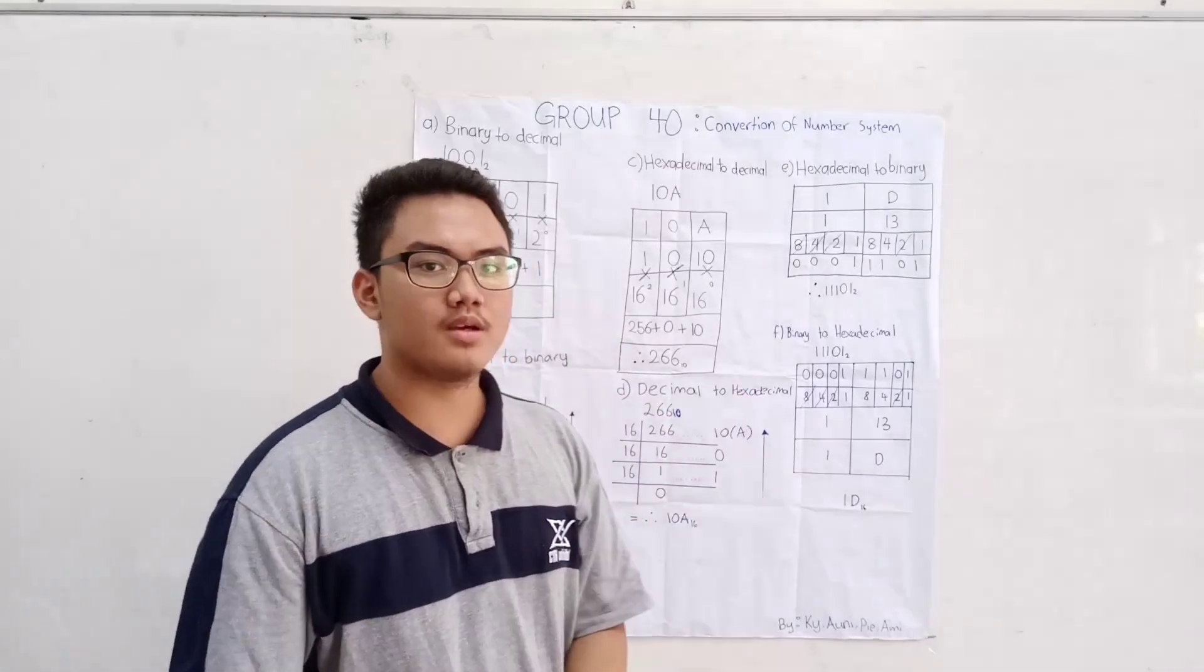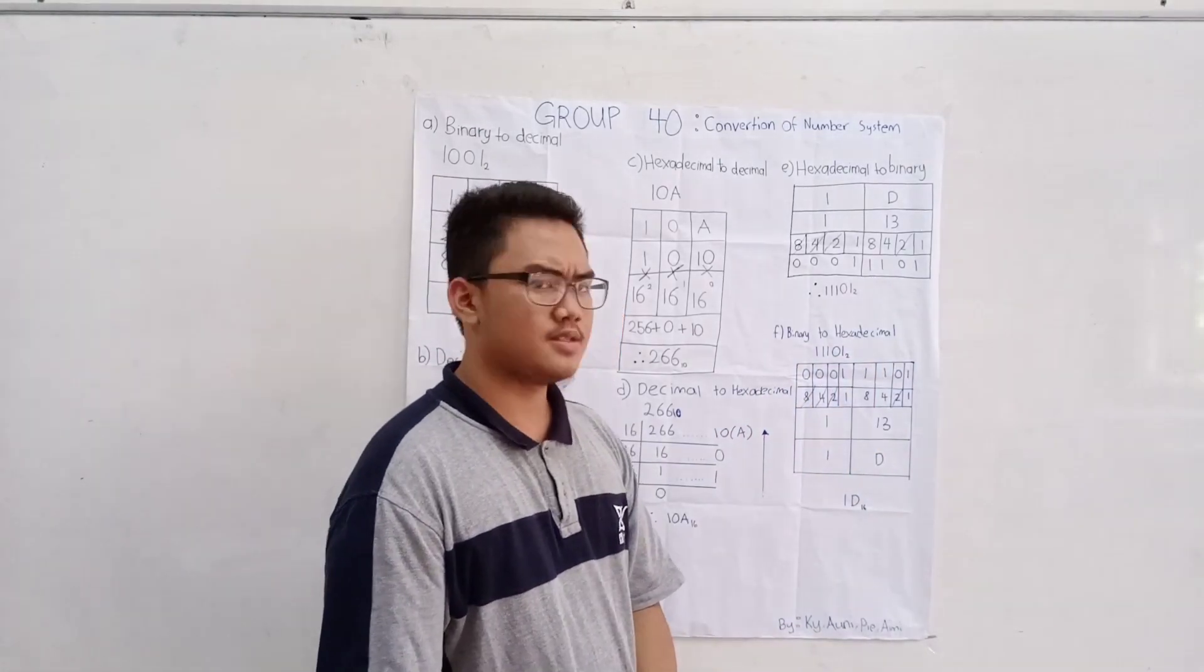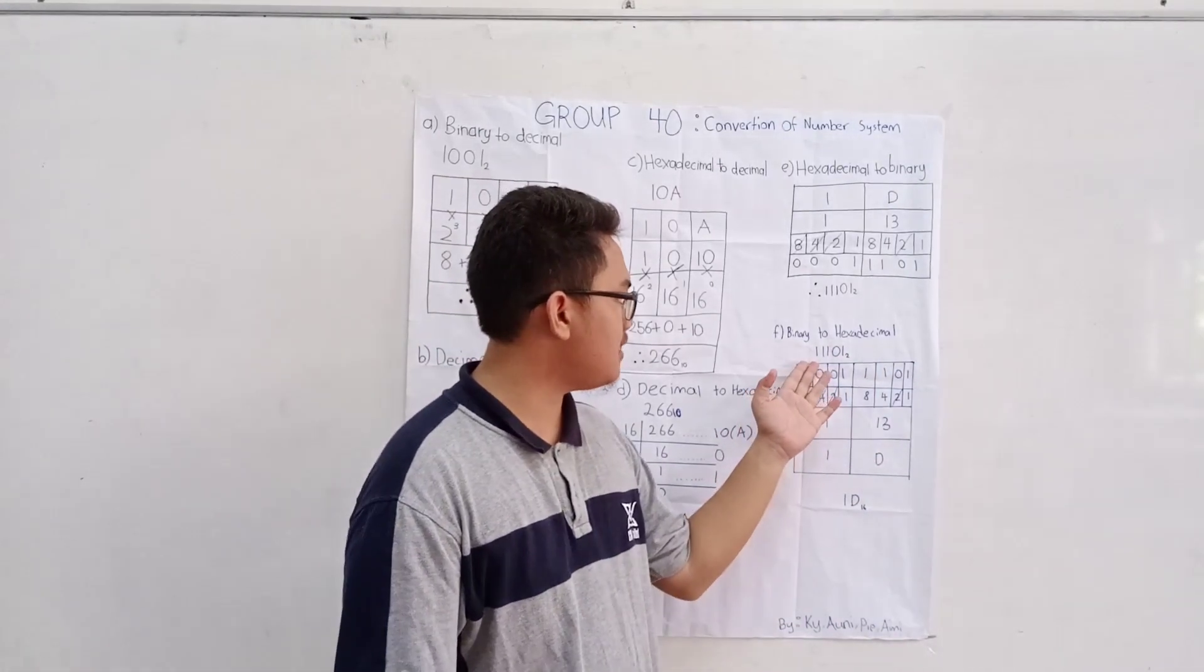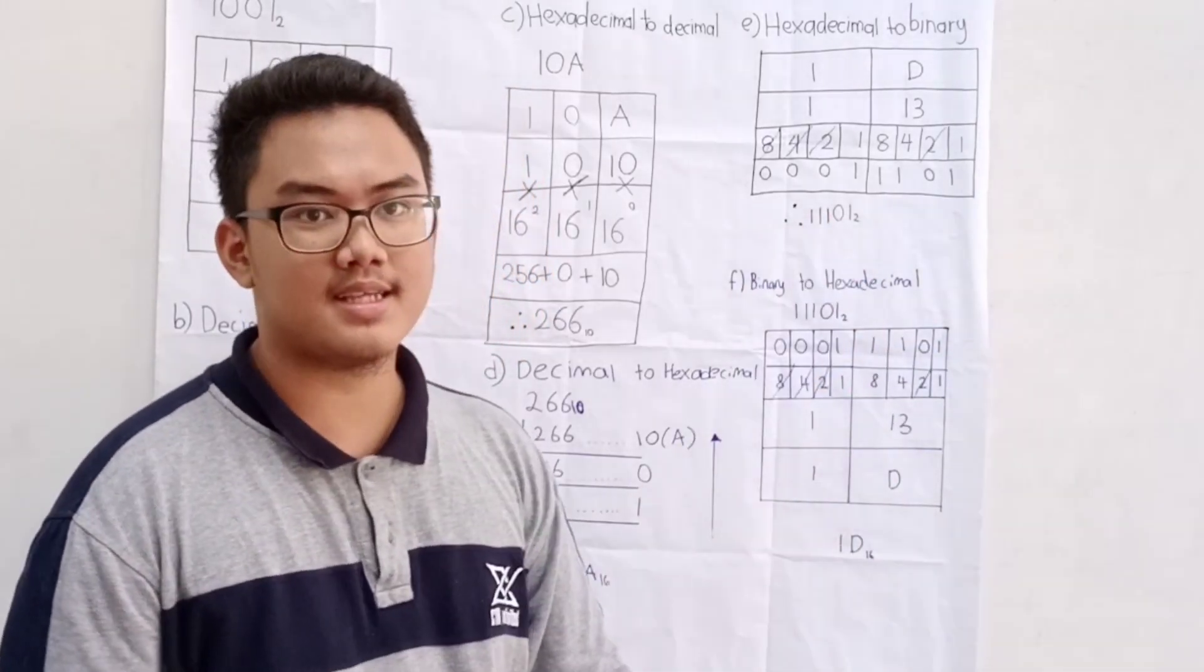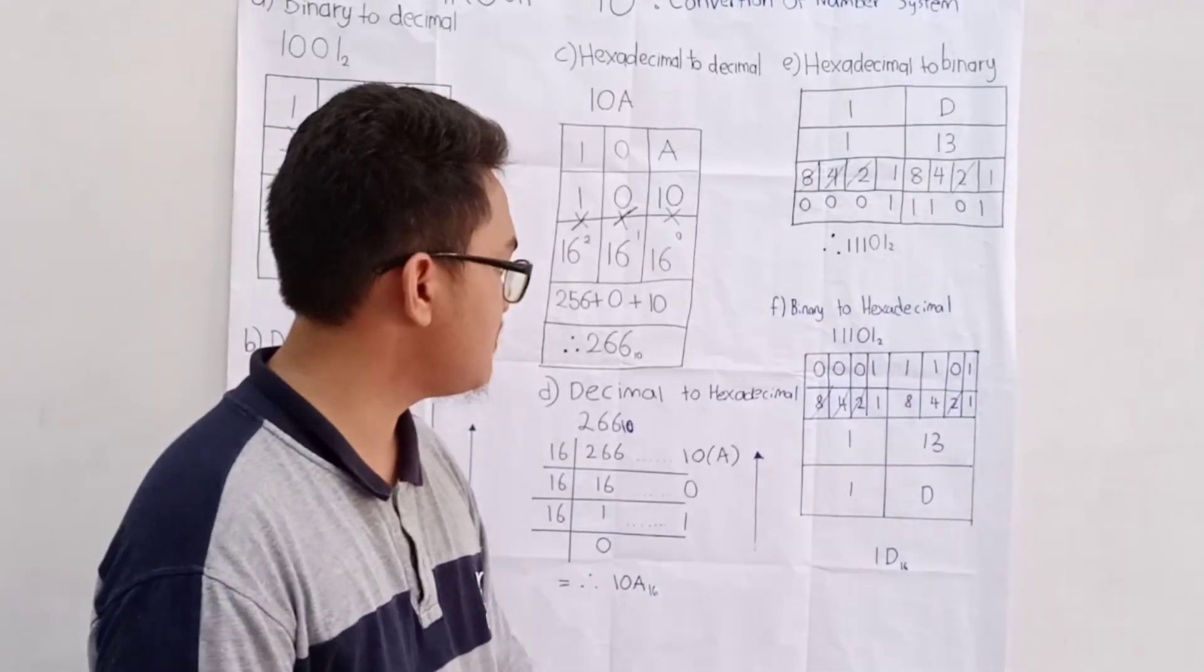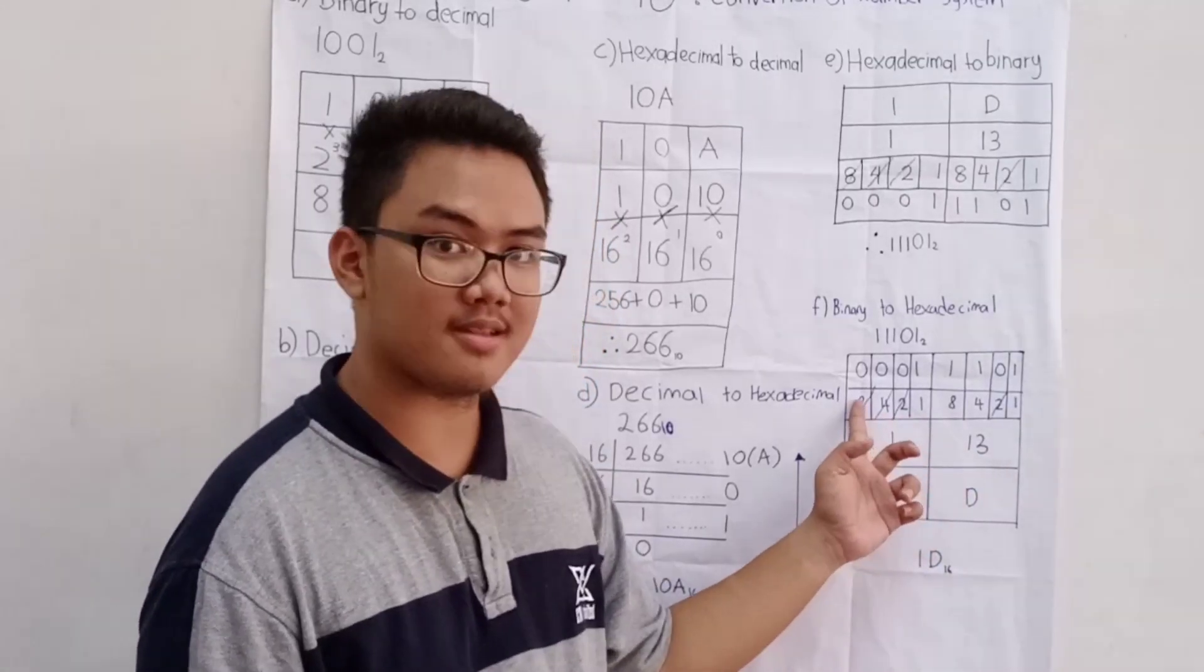Now, we go to the binary to hexadecimal. So, we get B11101. Just same like the hexadecimal to binary. We will split it in groups of four. 1, 2, 4, and the next group.